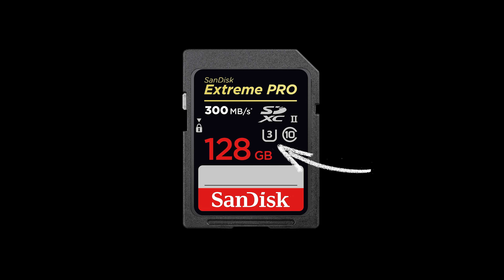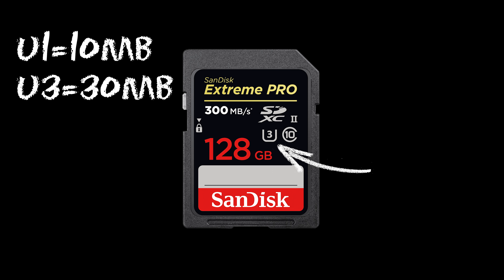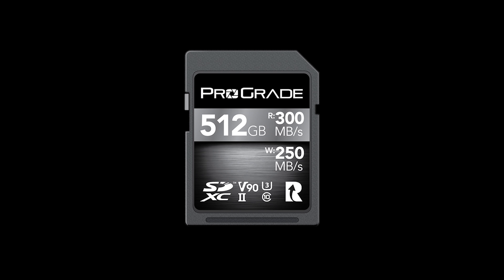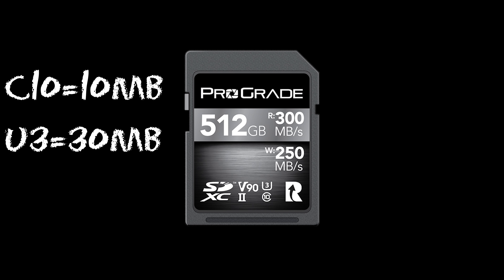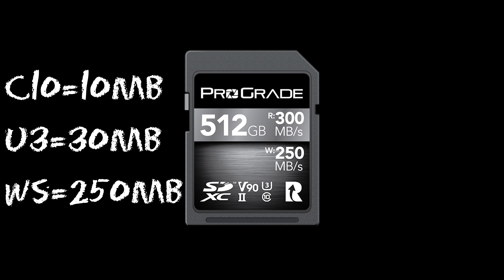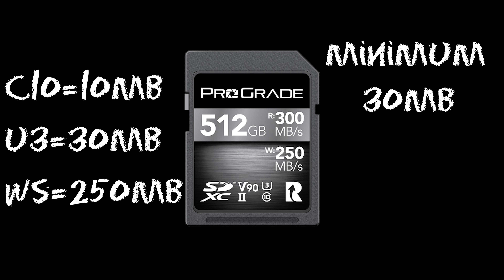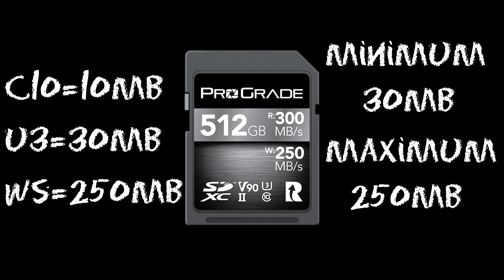Things are not different for the U symbol — it has two types: U1 with 10 megabytes and U3 with 30 megabytes minimum writing speed. It's just another standard like the sustained speed. So if you have a card with C10, U3, and 250 megabytes writing speed, that means the minimum is 30 megabytes and the maximum is 250.